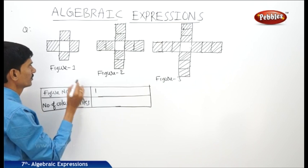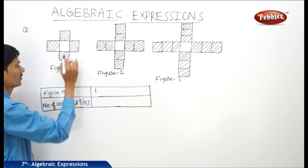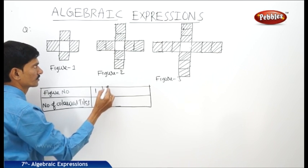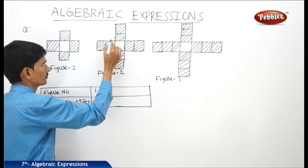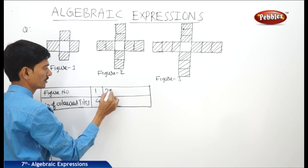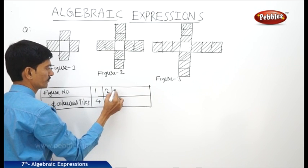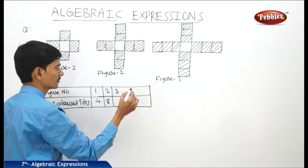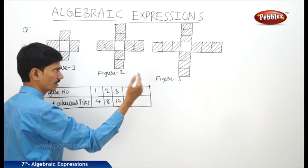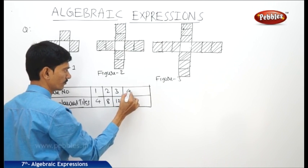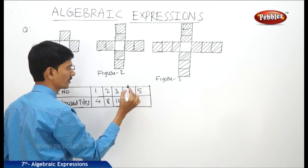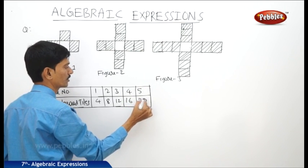In the first figure, there are 4 colored tiles. In the second figure, there are 8 colored tiles. In the third figure, there are 12 colored tiles. If you draw the next figure, in the fourth figure there will be 16 colored tiles, and in the fifth figure there will be 20 colored tiles.